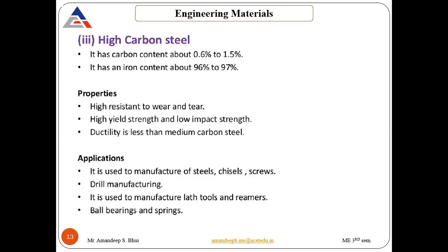Yield strength is a property of ductile materials — when under tensile load, the maximum yield strength of high carbon steel is very high; it can absorb a lot of energy before elongation or necking starts, as seen in the stress-strain curve. Ductility is less than medium carbon steel, because as carbon content increases, brittleness increases — carbon increases brittleness.